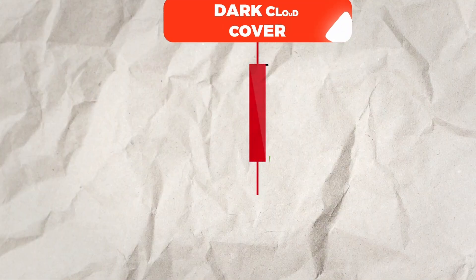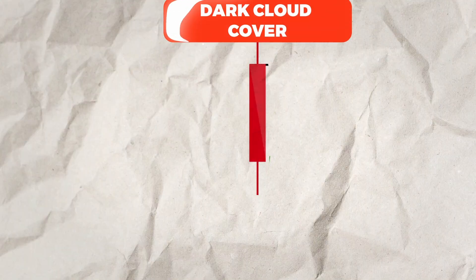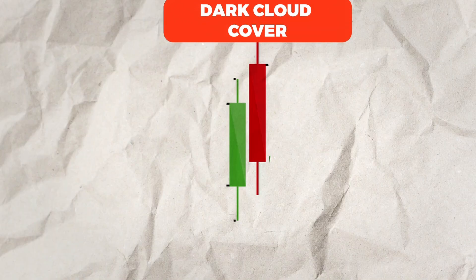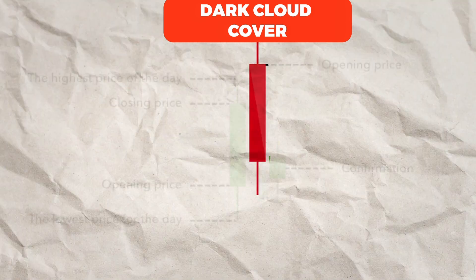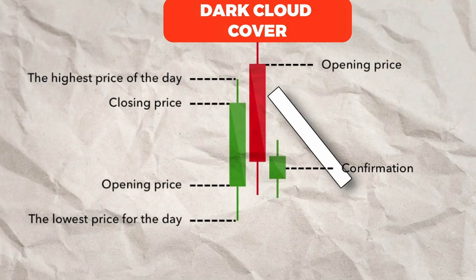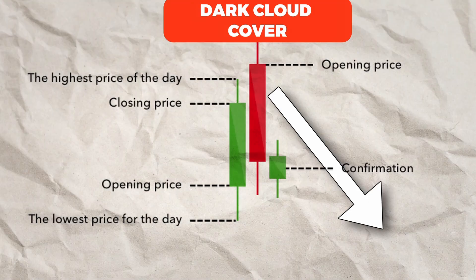Dark cloud cover forms when a red candle opens above the previous green candle but closes below its midpoint. It suggests a bearish reversal, with the bears taking over the session.